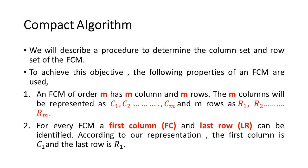We will describe a procedure to determine the column set and row set of the FCM. To achieve this objective, the following properties of an FCM are used: An FCM of order m has m columns and m rows. The m columns will be represented as C1, C2, ..., Cm and m rows as R1, R2, ..., Rm.